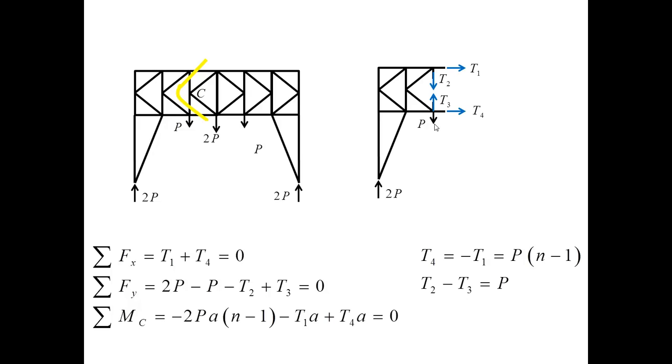If I write down the sum of forces on X, sum of forces on Y, and sum of moments about point C, I can calculate the forces T1 and T4, which follow from the first and third equations. I should not be surprised that I cannot determine all the forces, simply because I started with a free body diagram with four unknowns and I wrote three equations.